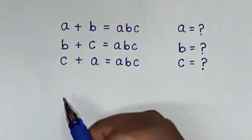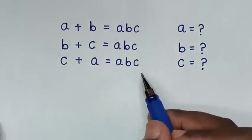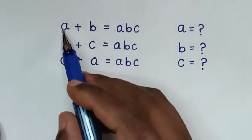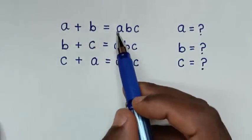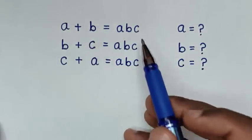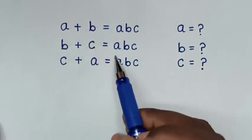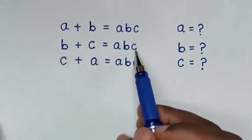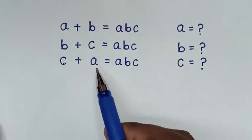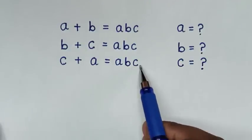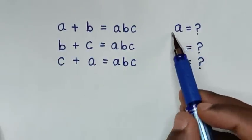Hello, you're welcome to solve this math problem: A plus B is equal to ABC, B plus C is equal to ABC, C plus A is equal to ABC. Find the value of A, B, and C.